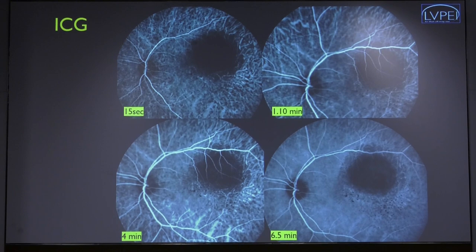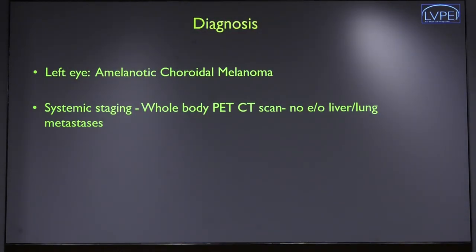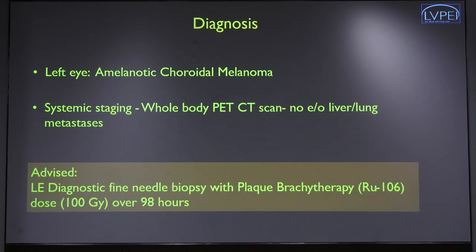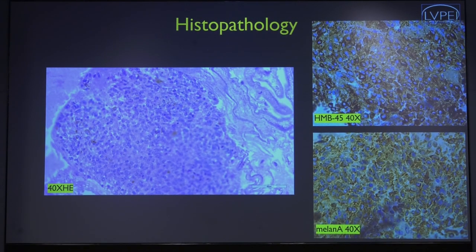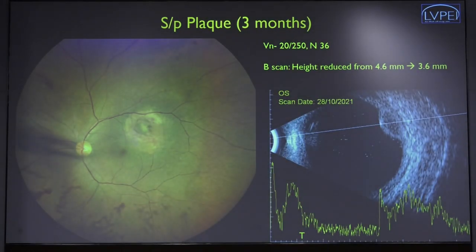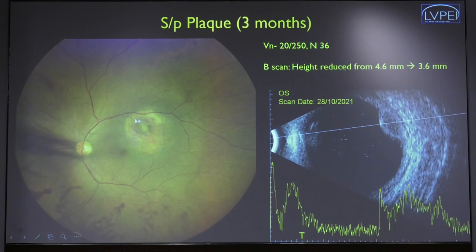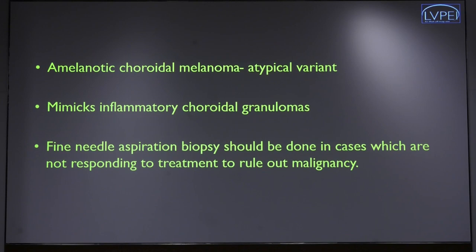ICG showed hypo-hyperfluorescence early on which remained hypofluorescent throughout all stages. A biopsy revealed the presence of an amelanotic choroidal melanoma — HMB-45 positivity confirmed melanoma cells. Plaque brachytherapy was performed, and after just three months the lesion began regressing with margins becoming more well-defined. So whenever a case is not responding to initial treatment, it makes sense to revise the diagnosis. This was an amelanotic choroidal melanoma mimicking choroidal granulomas.